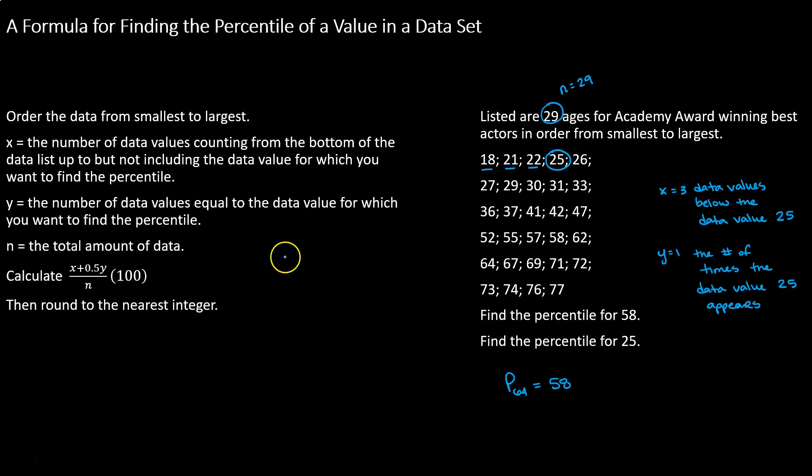Plug that into our formula. We have 3 plus 1.5 times 1, divided by 29 times 100. Or we can say 3.5 divided by 29 times 100. That comes out to be about 12.07.